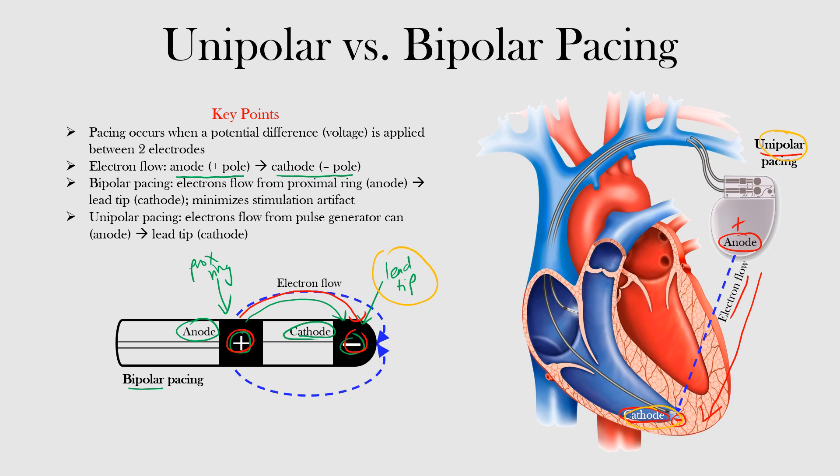With unipolar pacing, the pulse generator is located underneath the patient's chest wall, and the electrons have to travel all the way from that region to inside the heart. Between that gap, there may be excitable tissue that is picked up, causing artifact. The electrons have to flow so far.